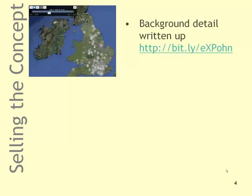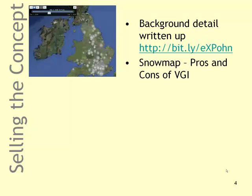An important part of this is selling the concept of VGI. I've written background detail of how I did it at a reference you can look up. For example, one screenshot shows a snow map of the United Kingdom that came from Twitter. I talk through the pros and cons of VGI — you can see it appears to be snowing only in London, which isn't real; it's just where most Twitter users live. So out in far west Wales, there's nobody at all — I discuss that there.